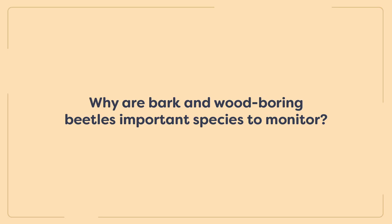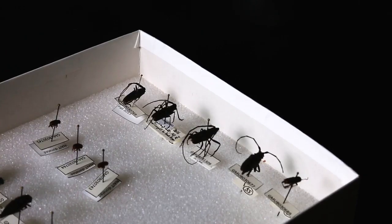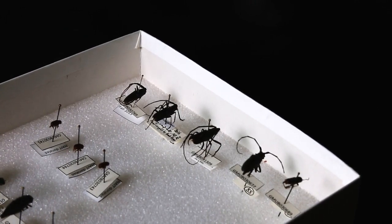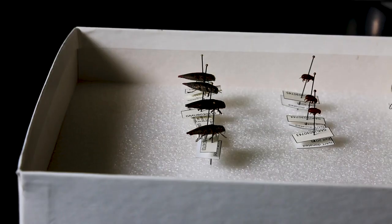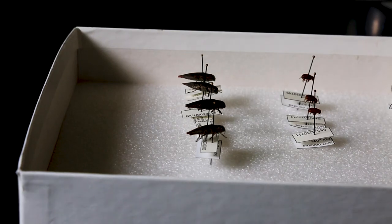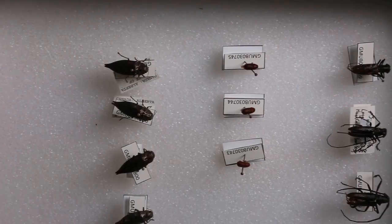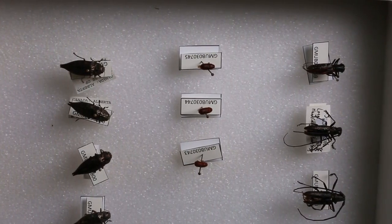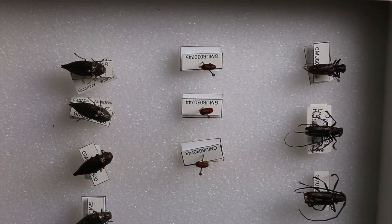Bark and wood-boring beetles are especially problematic as exotic and potentially invasive species because of their rather cryptic development. They spend a portion of their life cycle under the bark or inside the wood of trees, which makes them difficult to detect or intercept in international ports of trade.